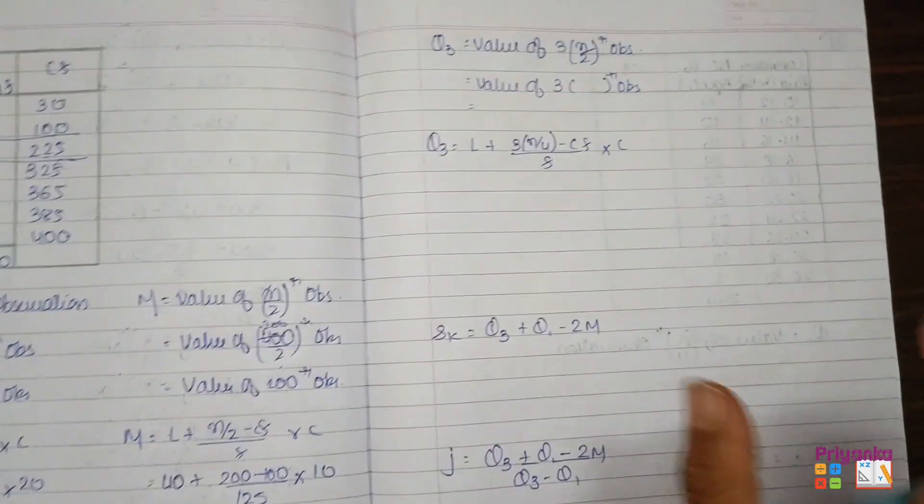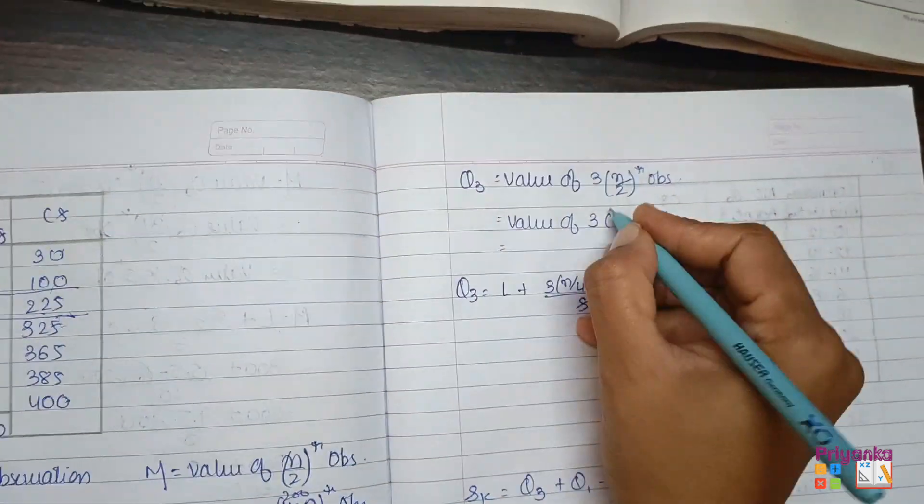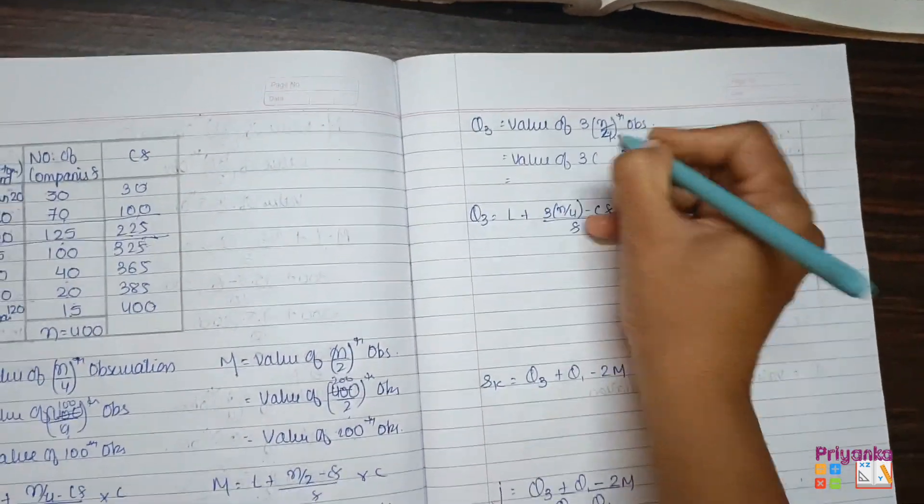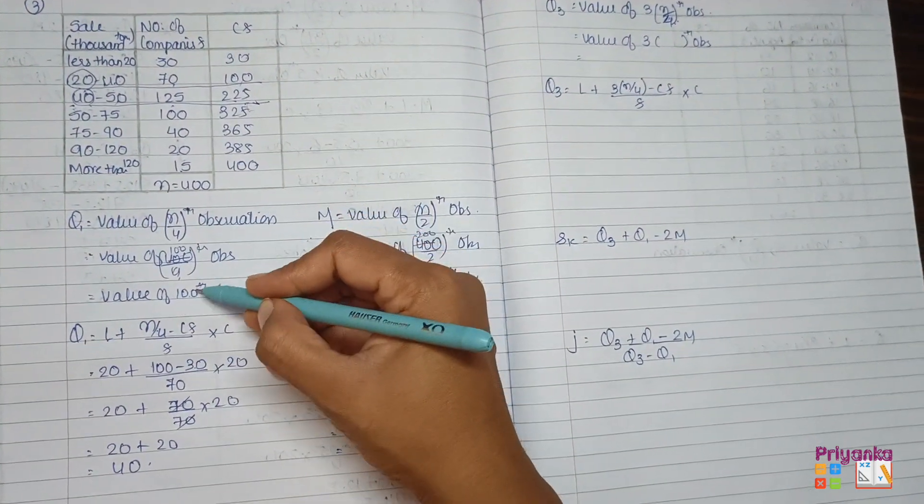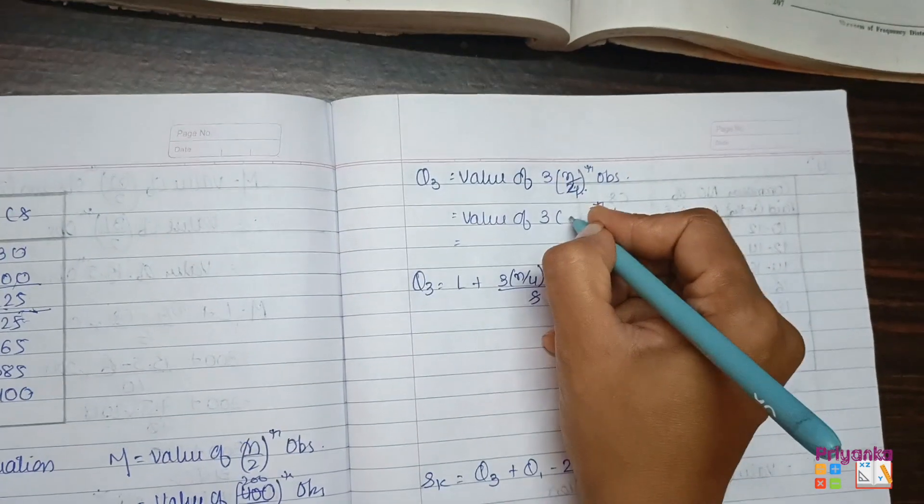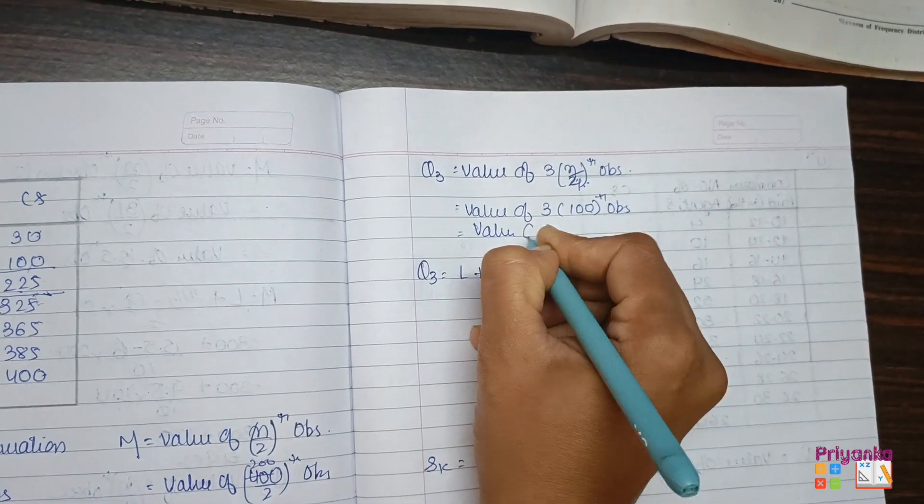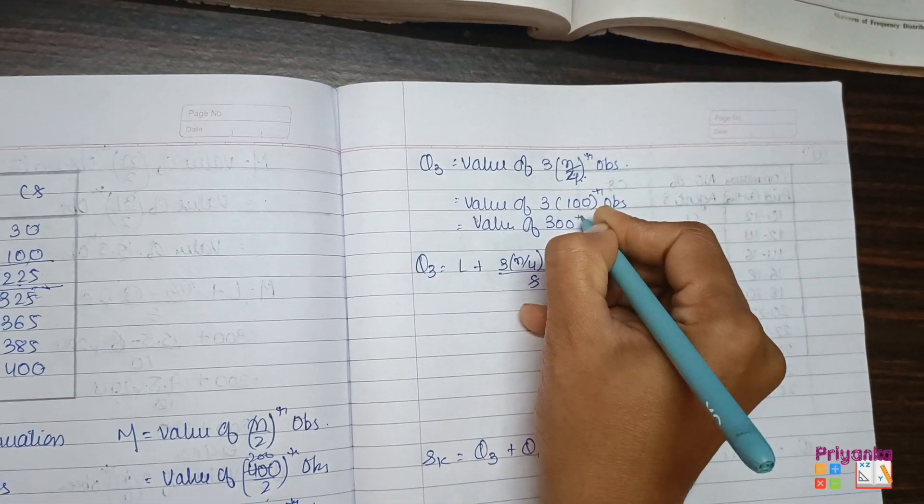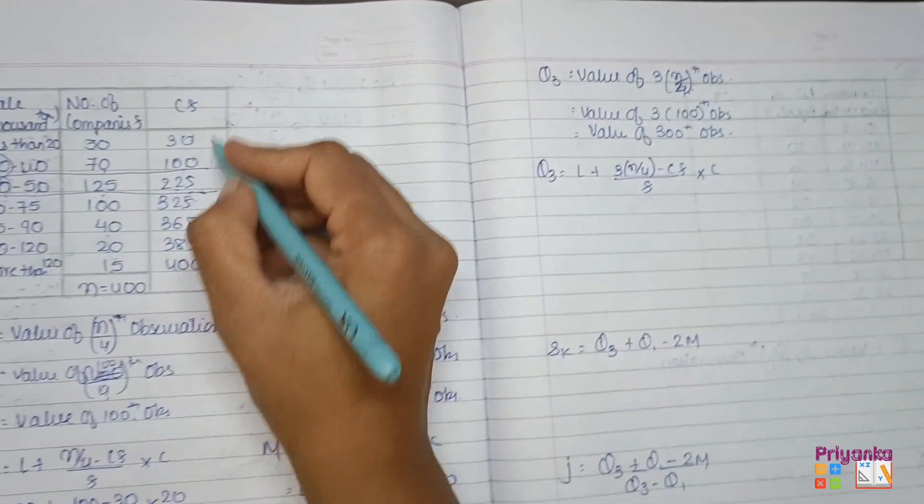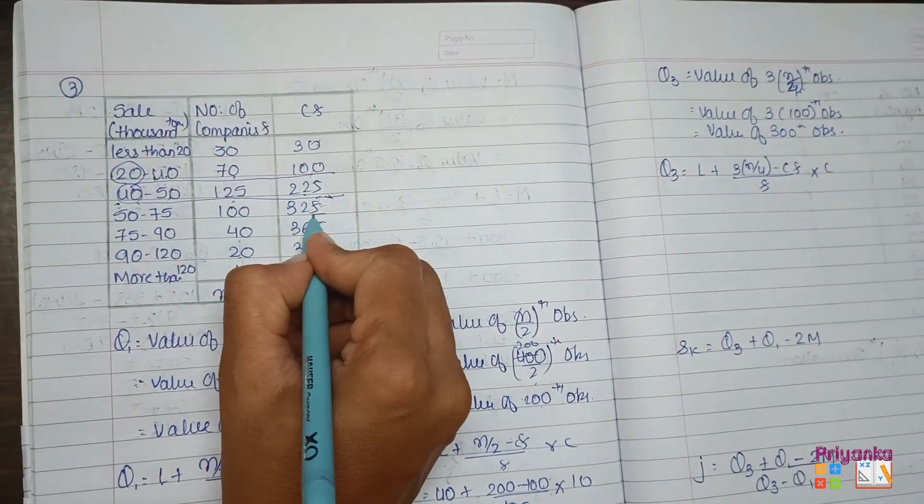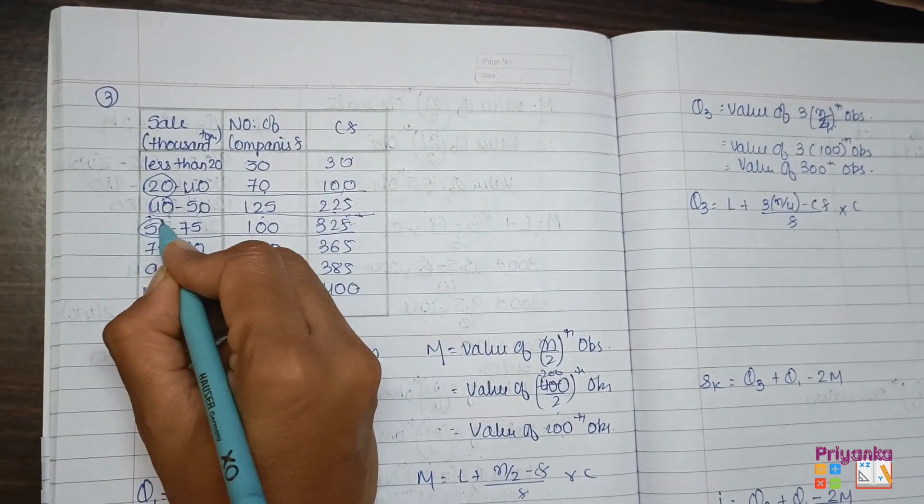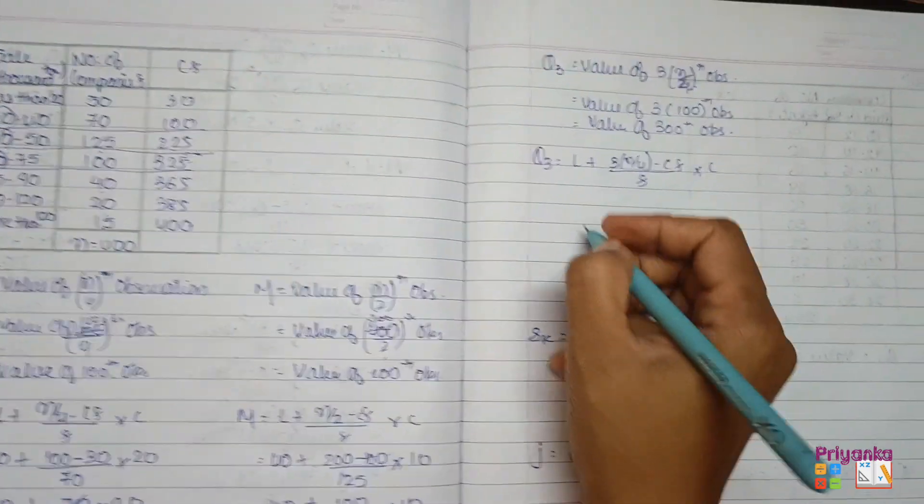Next we will solve Q3. So here I am directly going to take N upon 4, sorry not 2, 4 from the Q1 which is 100. So here I took 100 multiplied by 3. So the value of 300th observation. So the value of 300 observation, so CF we will see 300, this is 325 which is 300. This is lower boundary point.